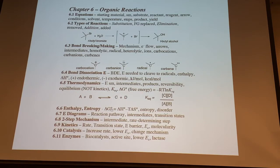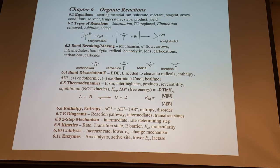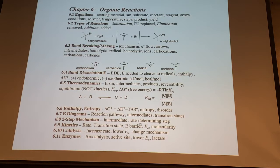If we're breaking bonds, that's an endothermic process. If we're making bonds — bringing together reactive intermediates to create stable products — that's exothermic. All reactions are a function of free energy, which is a combination of enthalpy and entropy — energy in bonds and randomness. We'll review that with the equilibrium expression K, which relates through a logarithmic function to the free energy.